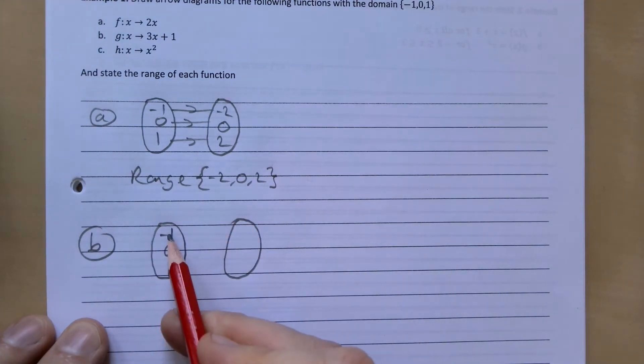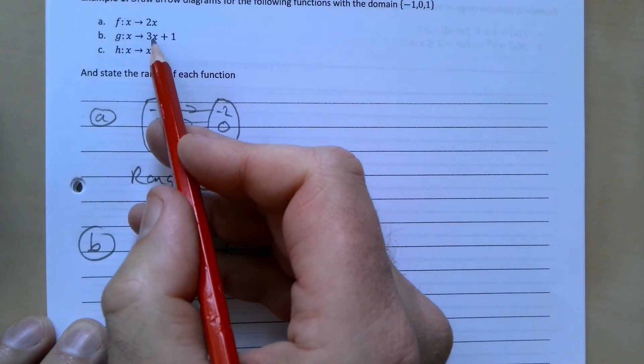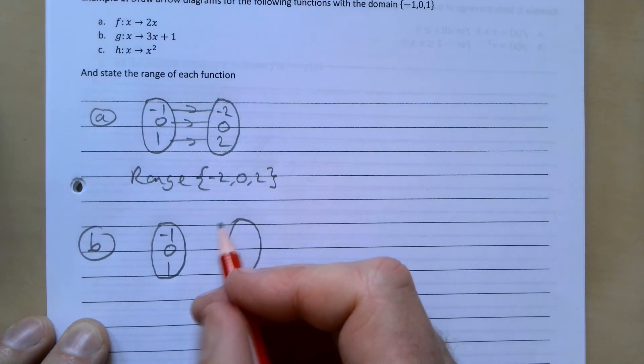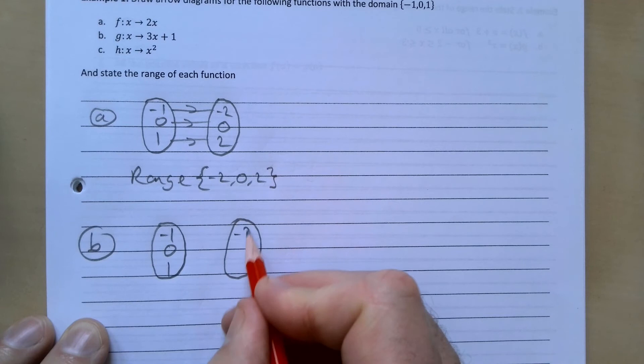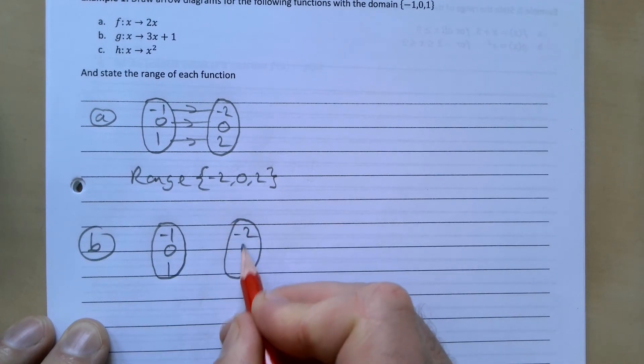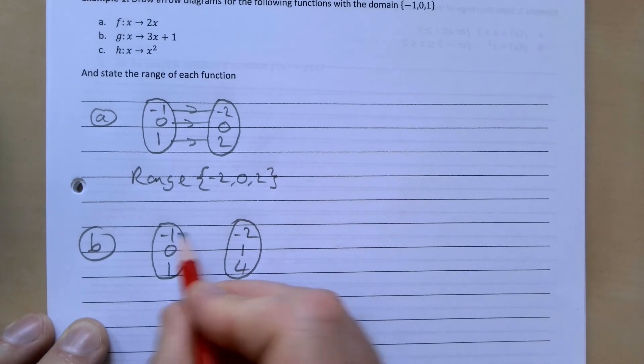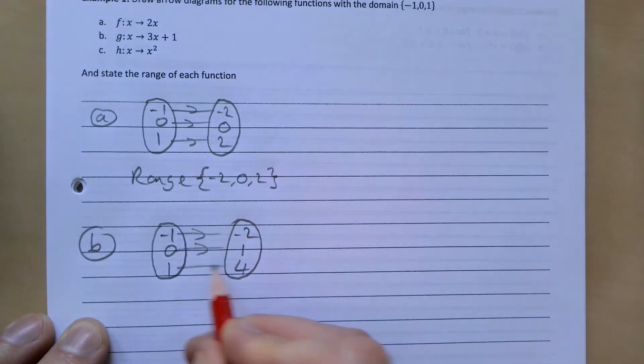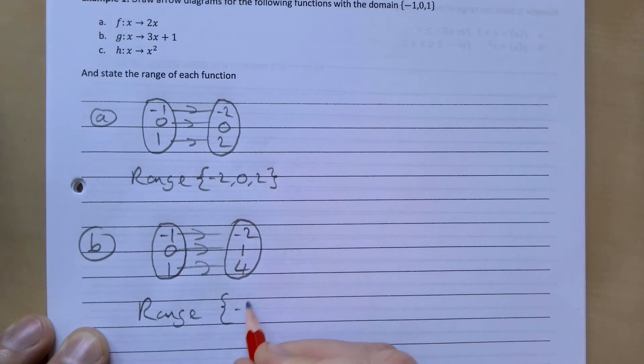So -1 times 3 plus 1 gives -3 plus 1, which is -2. 0 gives 1, and 1 gives 4. Nice and straightforward. The range here is {-2, 1, 4}.